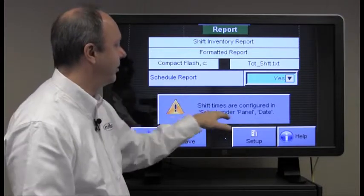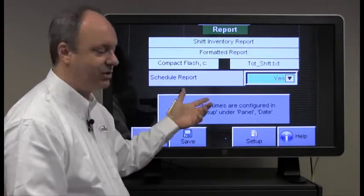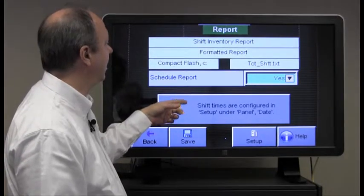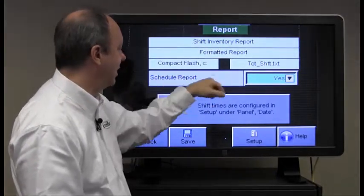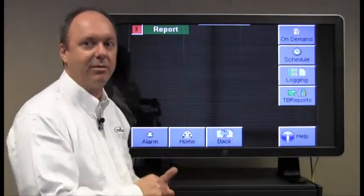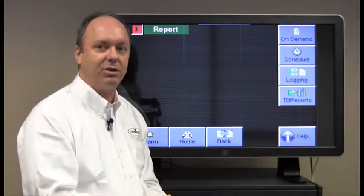So if we set it up under this particular screen, the three shifts, you simply come into this schedule part for the inventory, the shift inventory. You tell it yes and you save it. Now the system is set up to create a report for every shift that you've done.